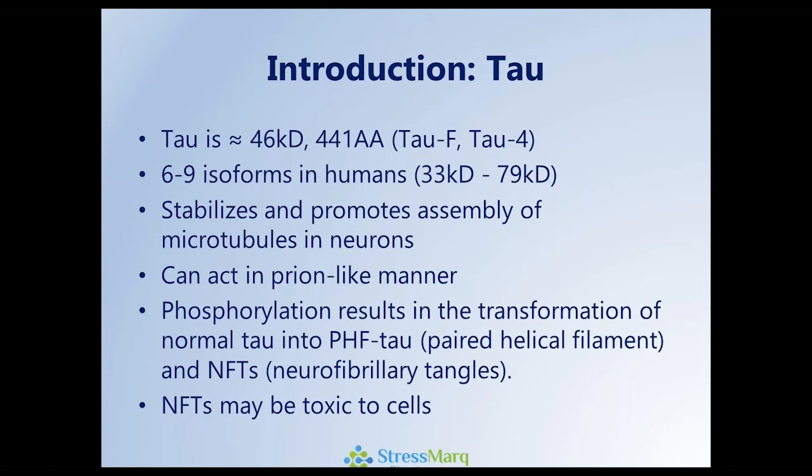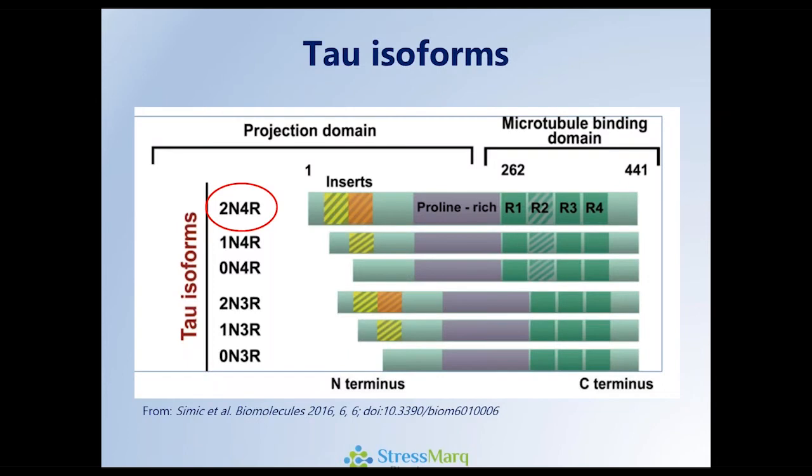When it undergoes phosphorylation, this results in the transformation of normal tau into paired helical filament tau, known as PHF tau, and ultimately neurofibrillary tangles, which may be toxic to cells. We generally work with the 2N4R construct, which is full-size, although we will also work with the K18 construct, which essentially is the R1 to R4 piece of the wild-type sequence.